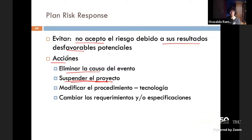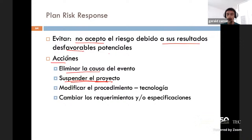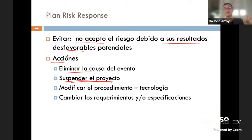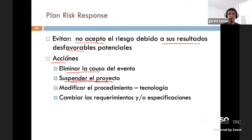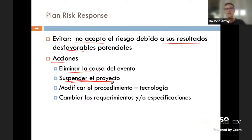Lo que significa mitigar es diseñar y determinar cuáles son las posibles acciones para disminuir el impacto o reducir la probabilidad de que ocurra. Si la probabilidad era alta y el impacto era 2, y esto nos dio 0.6, yo puedo pensar que si mitigo, voy a imaginar acciones concretas que van a hacer que si las implemento mi probabilidad pueda bajar o mi impacto sea menor.